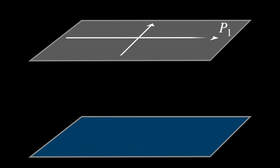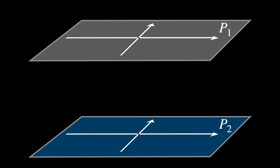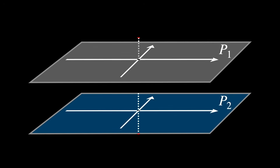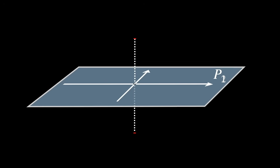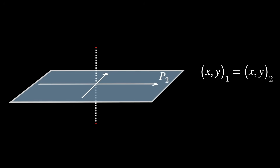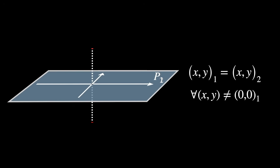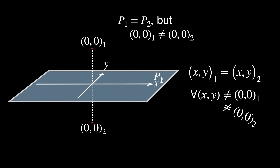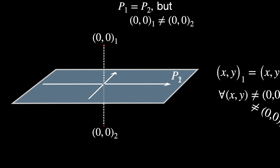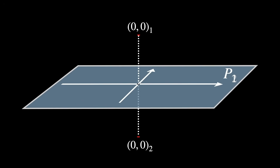Imagine two copies of the plane R², say P1 and P2. Now, glue them together along everything except the origin. That means all points X and Y different from the origin in P1 and P2 are identified — they are the same. But the origin in each plane, so 0₁ and 0₂, are kept as separate points. Now you have two origins, but everything else is merged into a single copy.